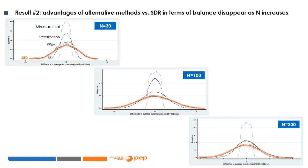A second important result is that the advantages of alternative methods disappear as sample size increases. With a sample size of 30, the distributions for alternative methods are more concentrated on zero while the single random draw shows more dispersion. With a sample size of 100, only min-max t-stat and pairwise matching exhibit considerably lower differences between means. For a sample size of 300 units, only the min-max t-stat shows better balance than the other methods.